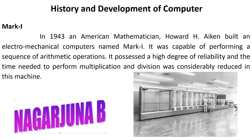In the year 1843, an American mathematician Howard H. Aiken built an electromechanical computer and named it Mark I. It was capable of performing a sequence of arithmetic operations including multiplication and division, and it took considerably less time compared to previous machines. It also possessed a high degree of reliability — that is, its withstanding capacity was more than earlier machines.